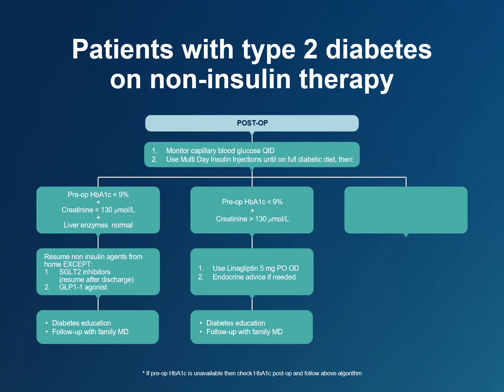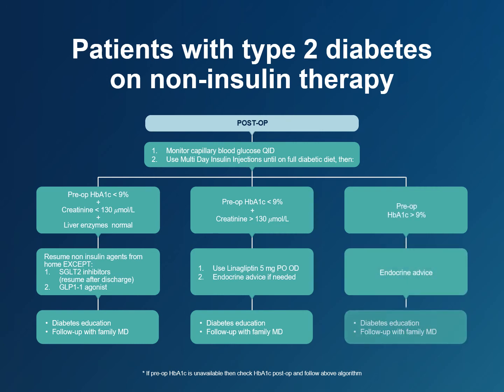If in doubt, contact endocrinology for advice. A hemoglobin A1c level close to 9% is not good and indicates poor diabetes control at baseline, but this can be addressed by the patient's family physician after discharge from the hospital. If the preoperative hemoglobin A1c is greater than 9%, contact endocrinology for advice. In all cases, make sure the patient receives appropriate diabetes education and follow-up with their family physician after discharge from the hospital.